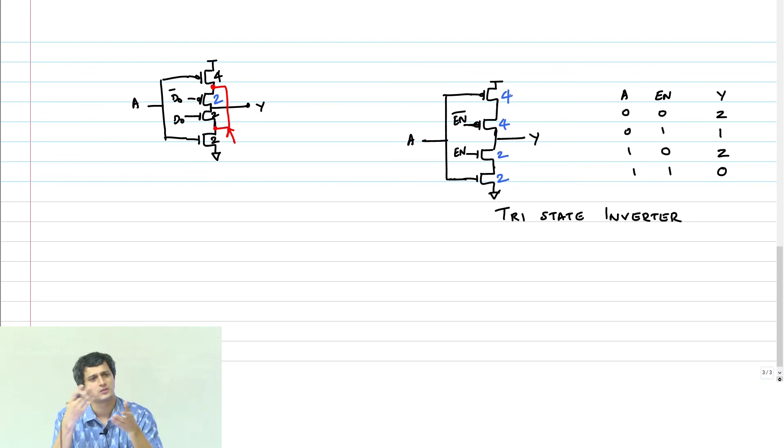Okay, so you can use the output Y therefore of this circuit can be wired-OR to some other tri-state inverter if you can ensure that they are mutually exclusive. That is the advantage of this kind of a circuit. Clear? Any questions here?